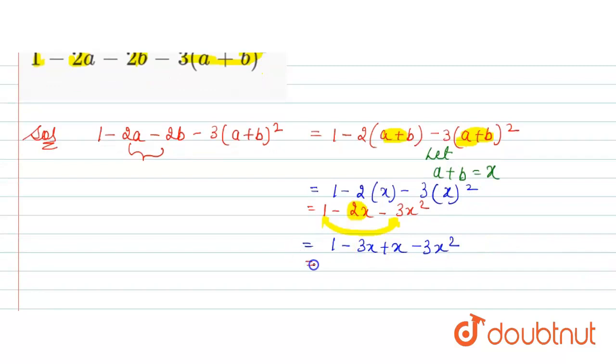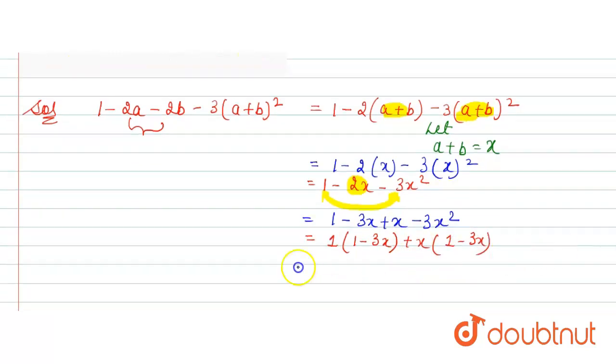Here take common 1 from the first two. Then here we get 1 minus 3x and from this take common x. Then it is 1 minus 3x. Now, take 1 minus 3x common from the whole. Then it is 1 minus 3x into 1 plus x.